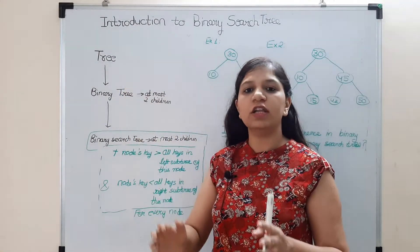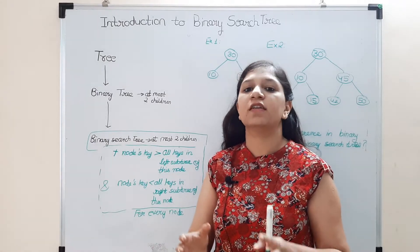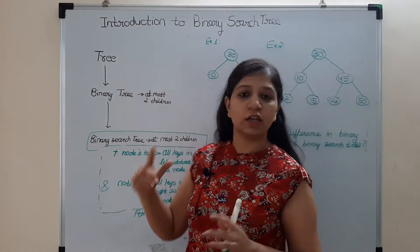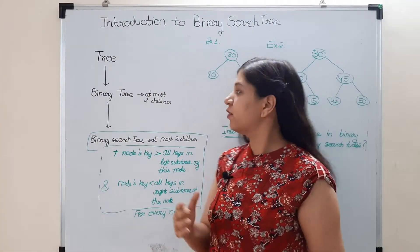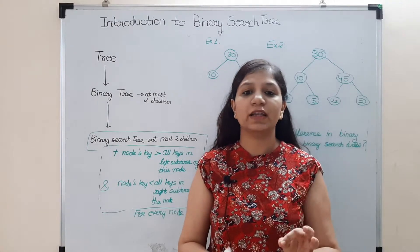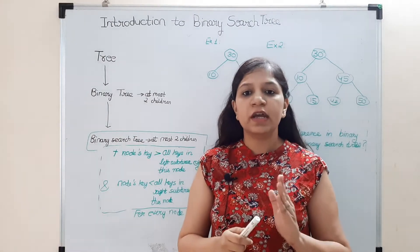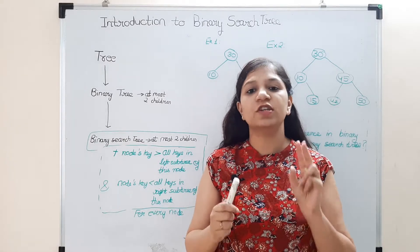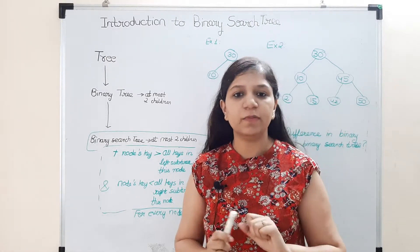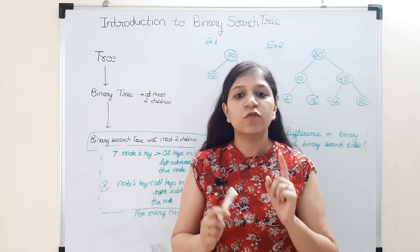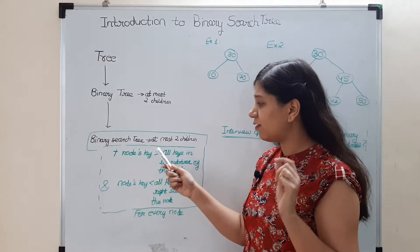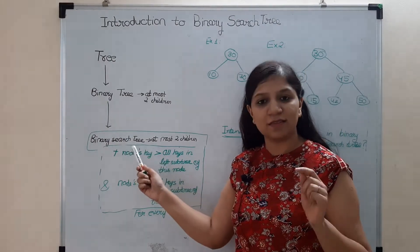We started with tree — it's a nonlinear data structure which maintains a hierarchical, parent-child relationship, with no restriction on the number of children. Then we moved to binary tree: as its name suggests, it can have at most two children. Now we are studying binary search tree, and you can explicitly see the word 'search' in its name.